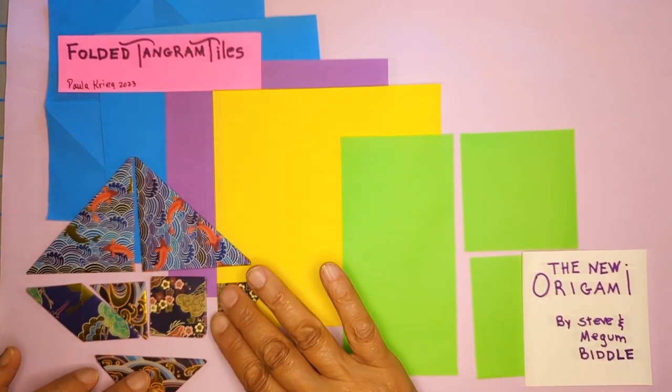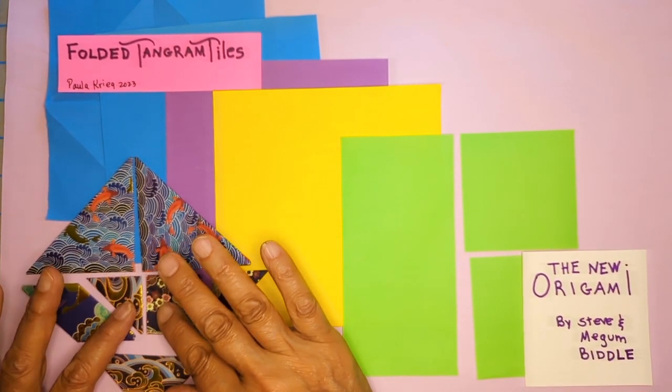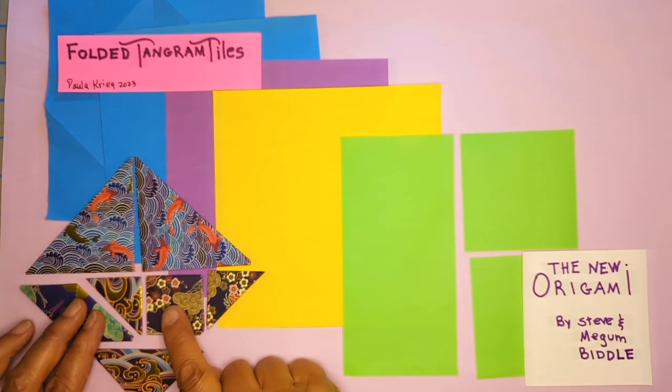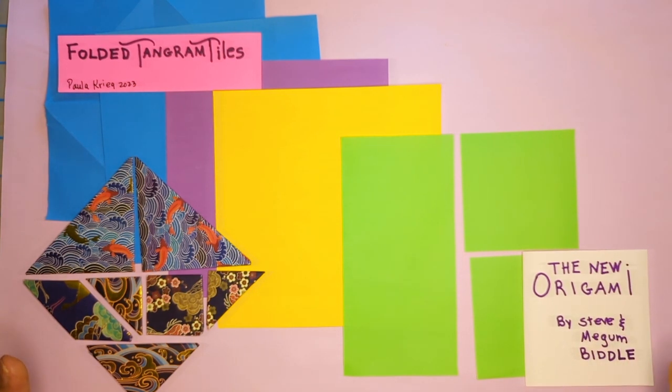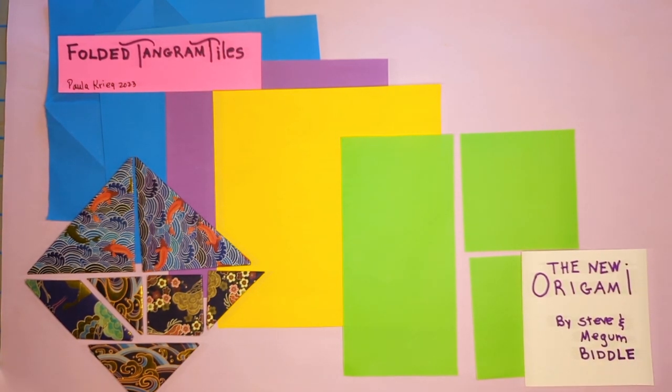I like these very much. I haven't seen any directions I've liked for making the square, and I'm going to show you a way that I think is a better one than is in the book, but I'm also going to show you what's in the book so you can make your own decision.